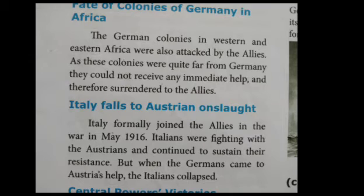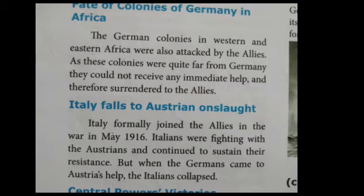Italy falls to Austrian onslaught: Italy couldn't face the attack of Austria. In May 1916, Italy joined the Allies in the war. The Italians were continuously fighting with the Austrians. But when the Germans came to help Austria, the Italians collapsed.